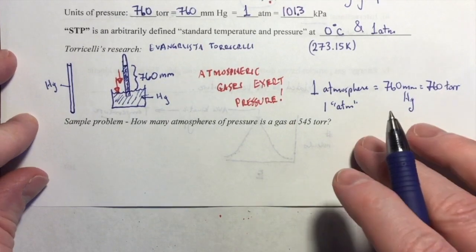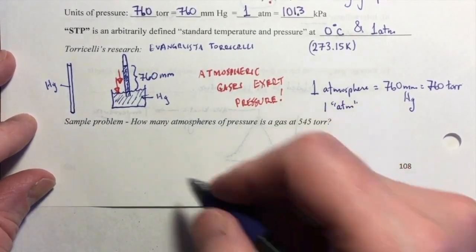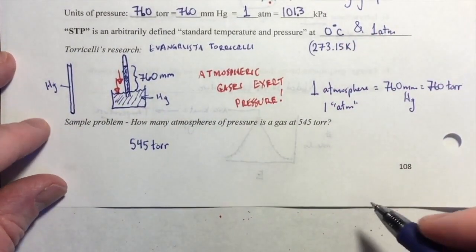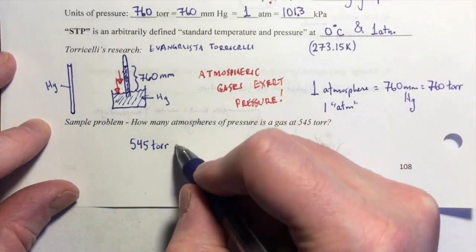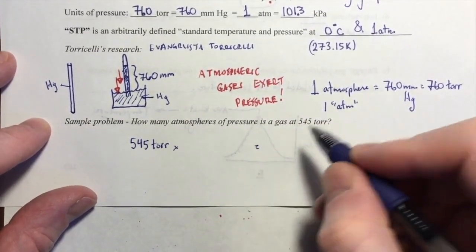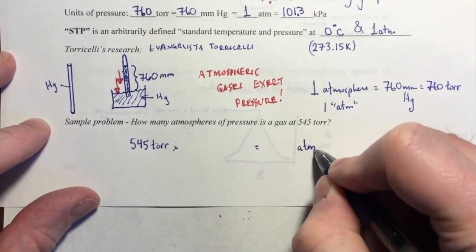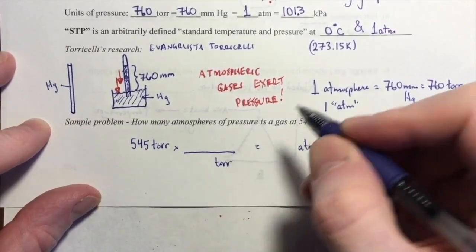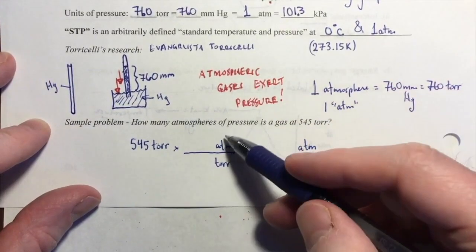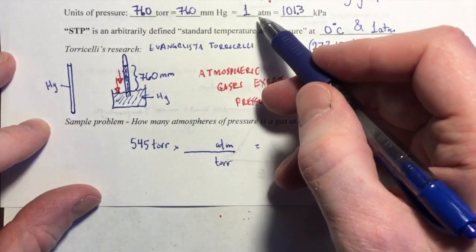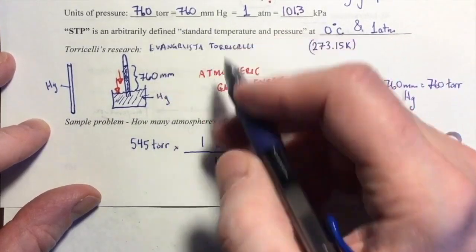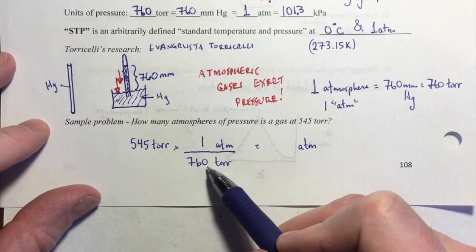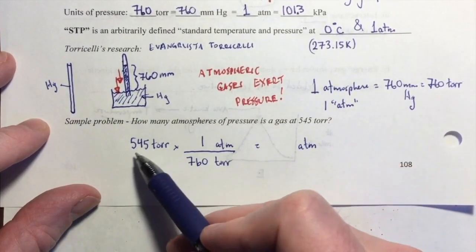Coming back from pausing the video, we're going to do a fairly quick conversion here. We've got 545 Torr. This is a simple dimensional analysis conversion. I'm going to convert it to atmospheres. I have a conversion factor here. Torr has to go on the bottom, atmospheres on the top. What is the conversion between atmospheres and Torr? One atmosphere is 760 Torr. I'm going to treat this as an exact number for the purposes of sig figs, so my answer should have three sig figs in it.